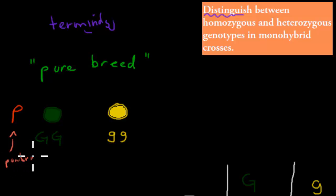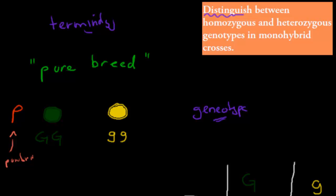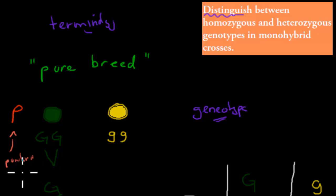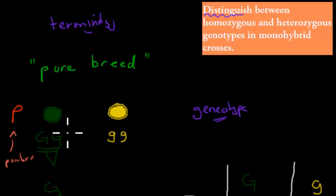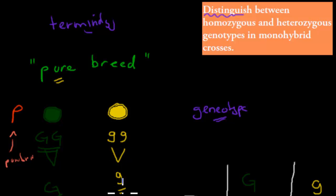We call them pure breeds because they have a genotype — the kind of alleles that make up the genes — where both alleles are the same. So one had two big G alleles, only big G, making it dominant and pure. Whereas the other had small g and small g, only small g alleles, making it recessive but still pure.